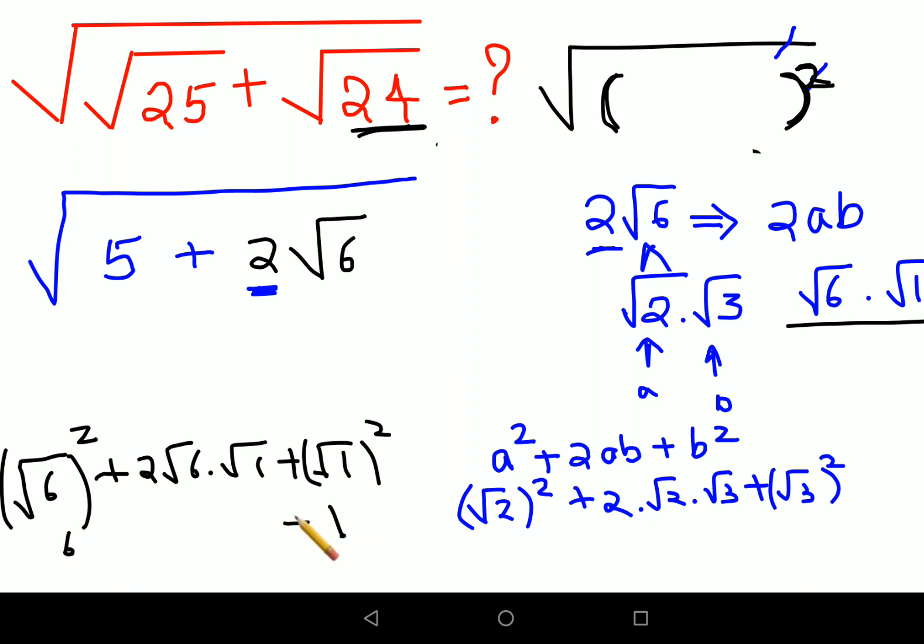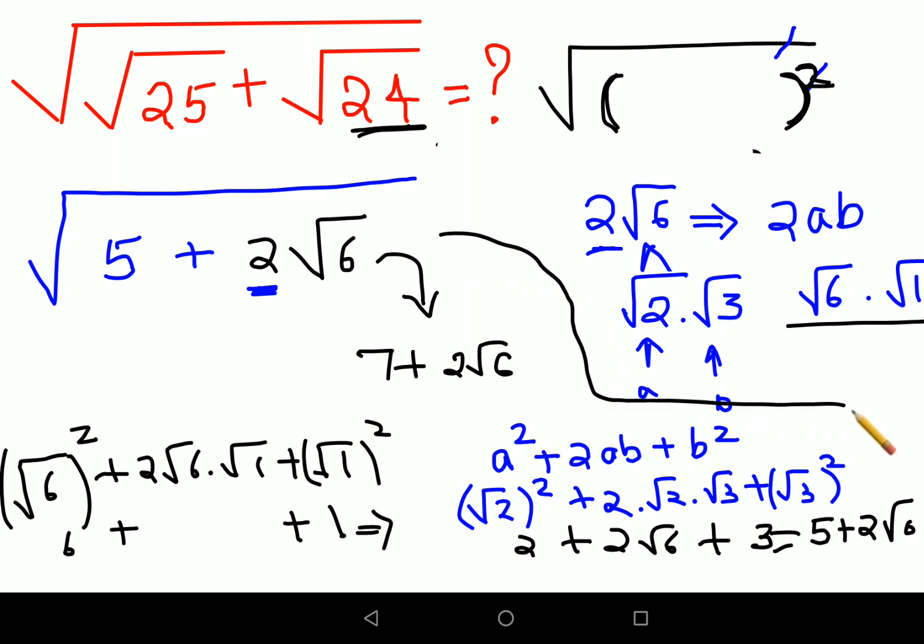Now let's try and simplify these squares. So this will become 6, this will become 1 and then there is a plus sign. So basically this gets you 7, this gets you 7 plus 2 root 6. But that is not what your entire question has come down to.